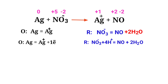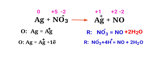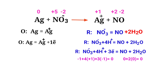Now balance the charges in the reduction half reaction. Both sides are not equal, so add three electrons to the left side to make it equal to zero. Now the addition of charges is equal in the reduction half reaction.